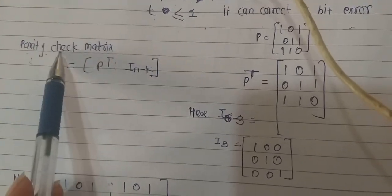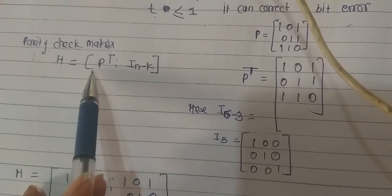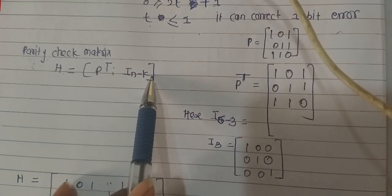Next is calculation of the parity check matrix. The formula for parity check matrix H is equal to P transpose and I of N minus K.